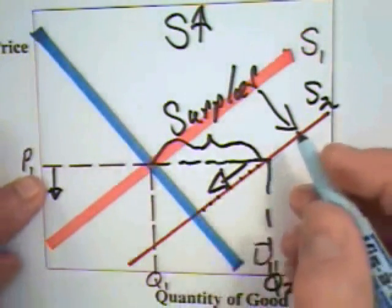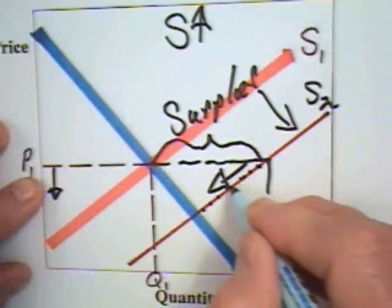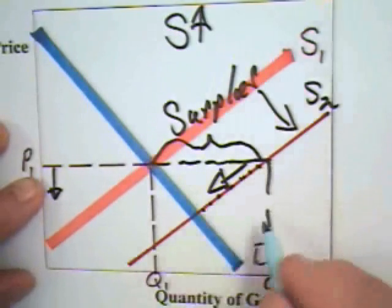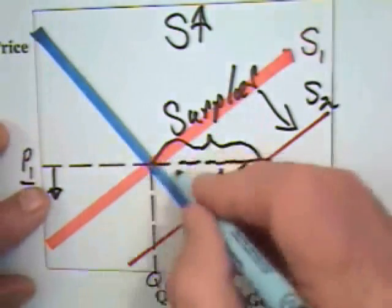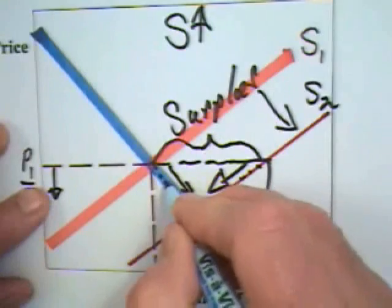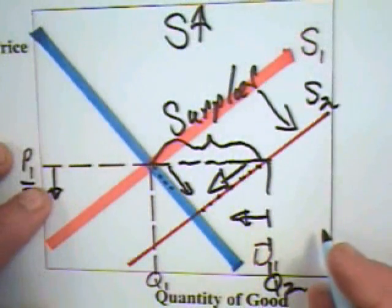When the price goes down, the price starts going below the marginal cost of each of these units. Firms that are producing the goods are losing money on those units and they start contracting the quantity supplied. As the price comes down, the price goes below the marginal value of these units, and so consumers can gain by buying more.